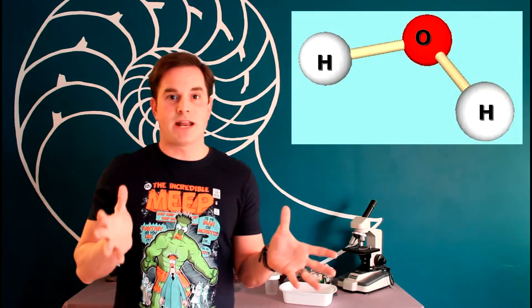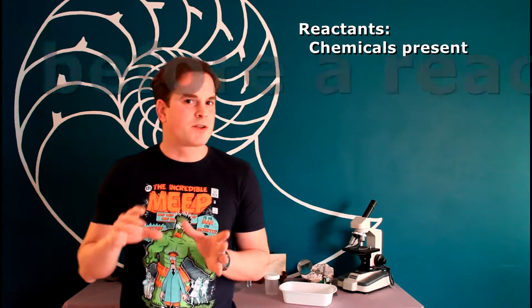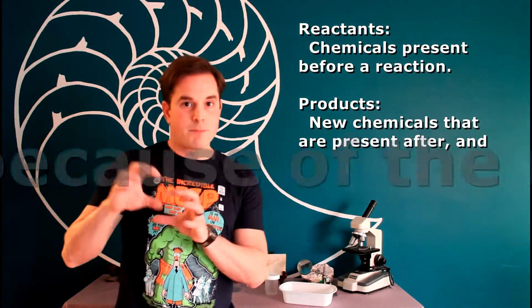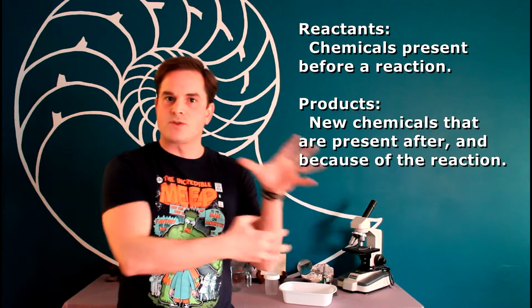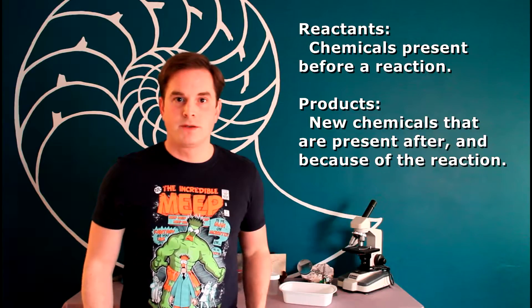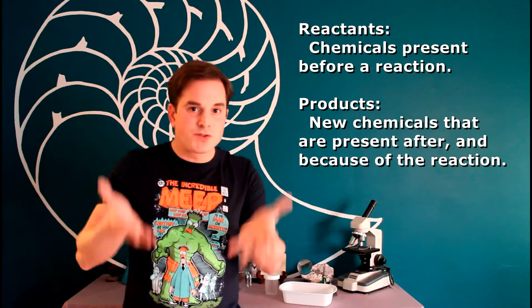When chemical reactions happen, the chemicals that are involved in the reaction, their atoms get rearranged. With the starting chemicals that we call reactants, their bonds are broken. The atoms reconnect in new ways and new bonds are formed. Those new rearrangements, those are our new chemicals that we produce. It's kind of like Mother Nature's way of playing with Legos.